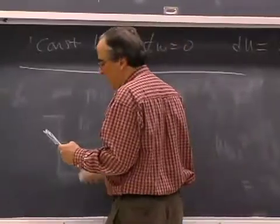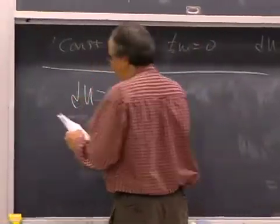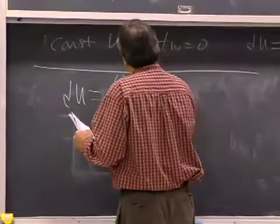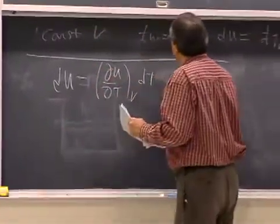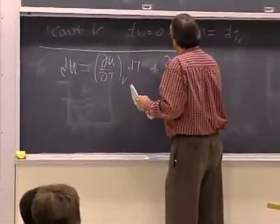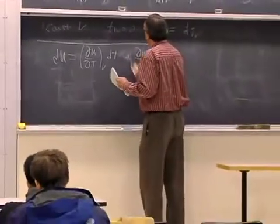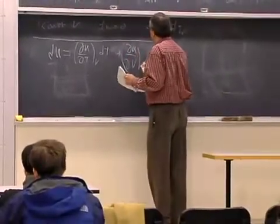So for a constant volume process, we can write du, partial derivative of u with respect to t at constant v dt, plus partial derivative of u at constant v dv.